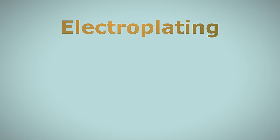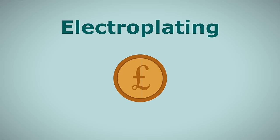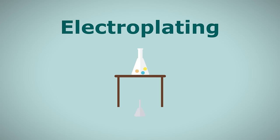In this video we're going to learn about electroplating. Electroplating is the process of coating one metal object with another. It works by electrolysis, which is when electricity is used to drive a chemical reaction.